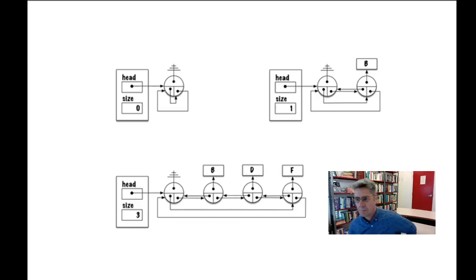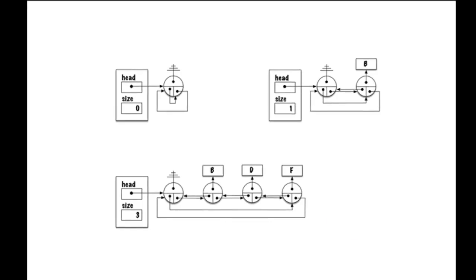Three examples illustrate this: an empty list has size zero and one node object (the dummy node); a list with one element has size one and two node objects; a list with three elements has size three and four node objects. In all cases, the number of Node objects is one more than size, because all lists begin with the dummy node.